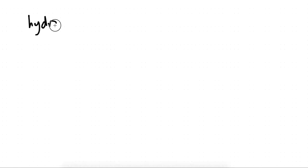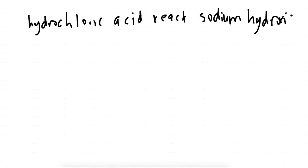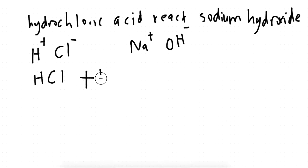Now something more interesting: hydrochloric acid reacting with sodium hydroxide. We don't have individual elements; we have compounds. For compounds we combine them in their ionic form. Hydrogen is H+ and chlorine is Cl−, so we get HCl. Sodium is Na+ and hydroxide is OH−, so we get NaOH.